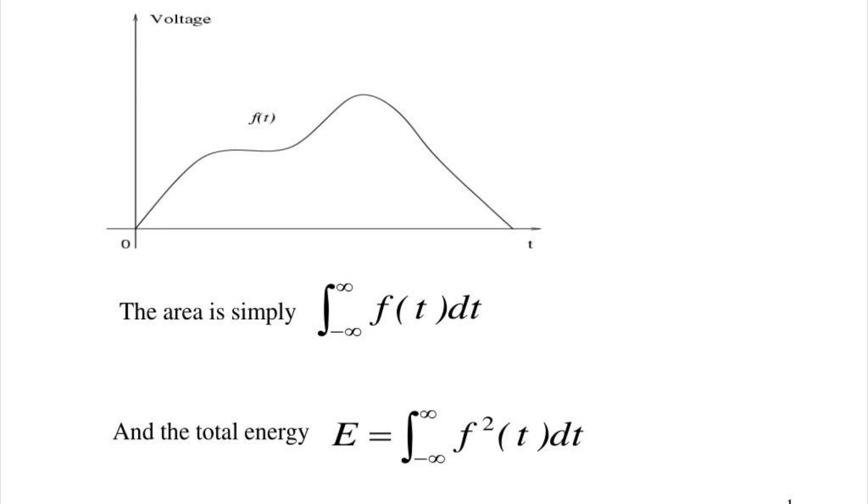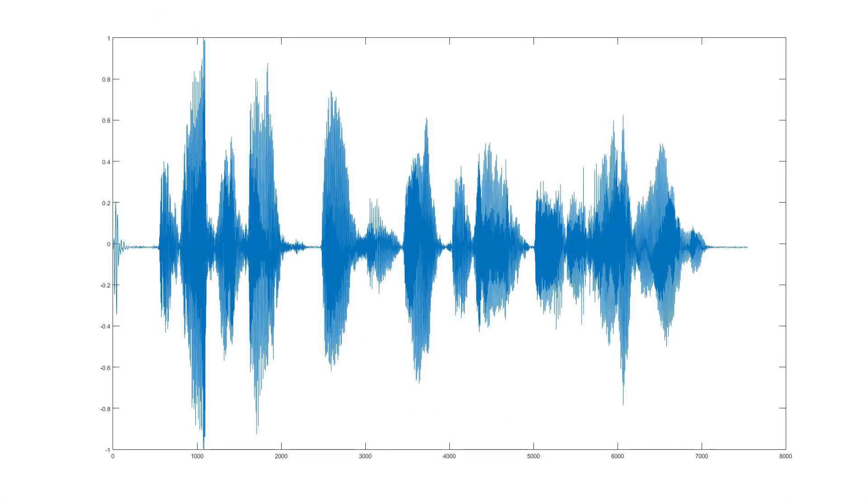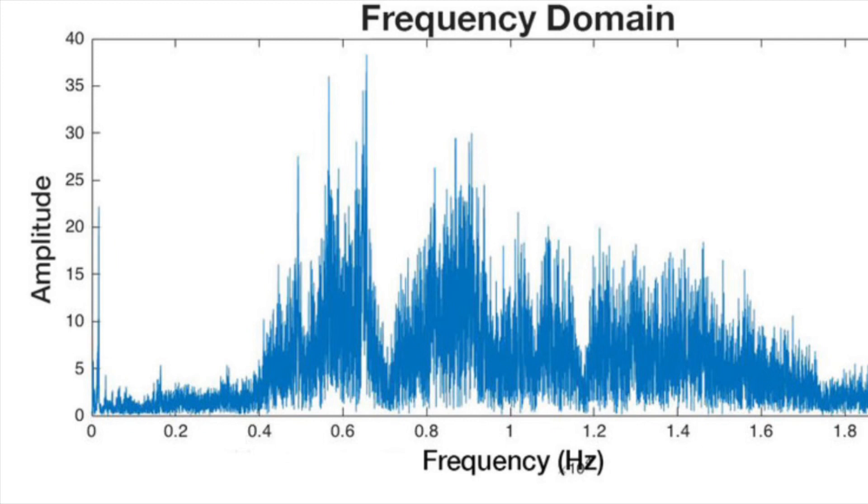Here, we have a time domain waveform of a simple audio signal. Notice how the amplitude varies with time. Now, let's apply the Fourier transform to convert this time domain signal into the frequency domain. Voila! We can now observe the different frequency components that make up this signal.